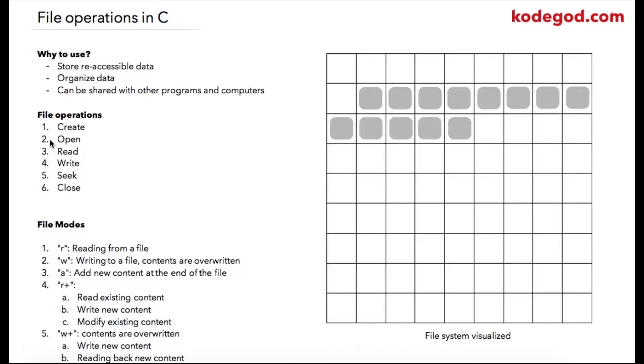We can perform these all operations over the files. You can create a fresh new file, you can open an existing file, you can read an existing file, you can write contents to a file, you can seek a particular section in the file by traversing to it, and you can close a file which is already open.